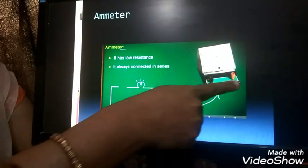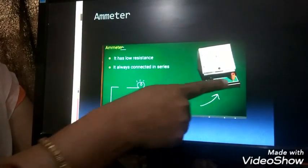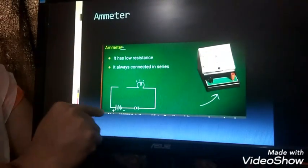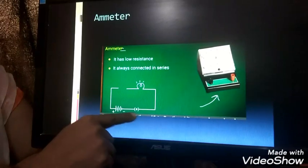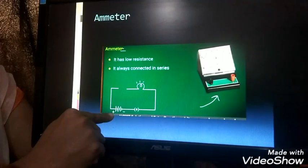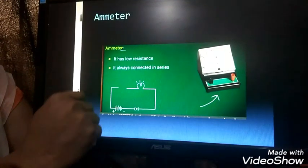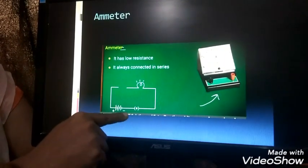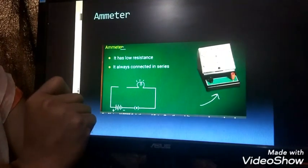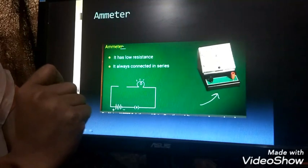This is the instrument which contains the positive and negative terminal. And this is the electric circuit in which this is the battery, this is the switch, this is bulb. The positive terminal of the battery is connected to the positive terminal of the ammeter, and the negative terminal of the battery is connected to the negative terminal of the ammeter.